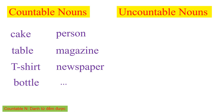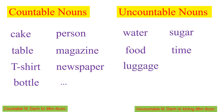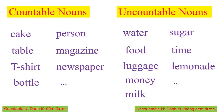Now let's move to uncountable nouns. For example: water, sugar, food, town, luggage, lemonade, money, milk, and so on. I have just given you some examples about countable nouns and uncountable nouns. Do you understand about them?